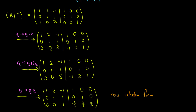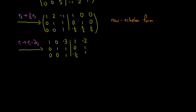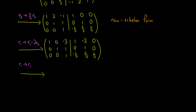We continue the row operations to form the identity matrix on the left. To make the entry above the leading one in the second row to 0, we subtract 2 times the second row from the first row. Lastly, to make the entries above the leading one in the third row to 0, we add 3 times the third row to the first row, and subtract the third row from the second row.